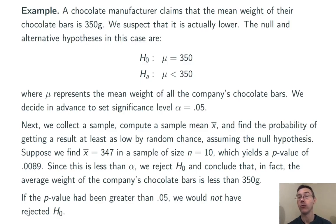Of course, if our p-value had been greater than 0.05, we would not have rejected H-naught. We would have had insufficient evidence to make that conclusion about the company's candy bars.